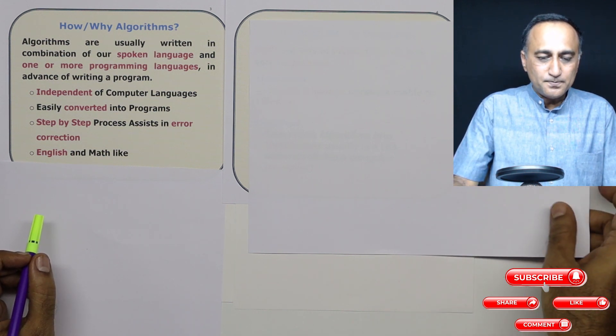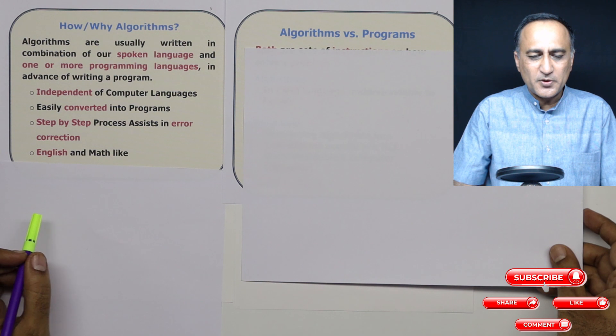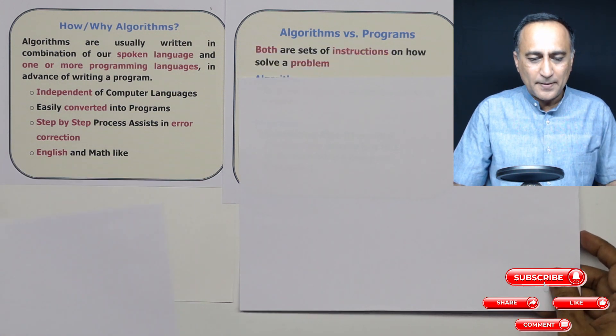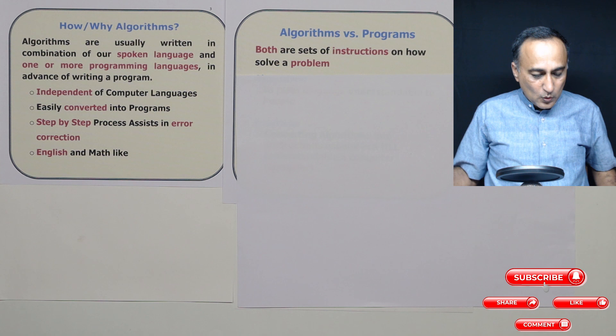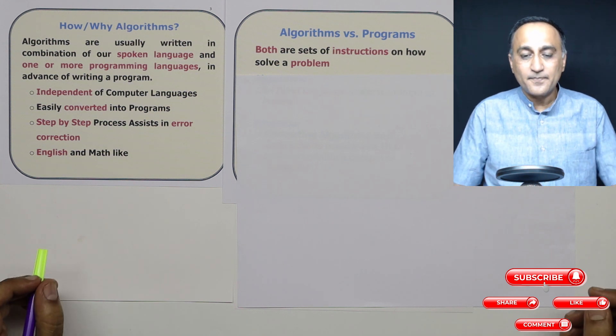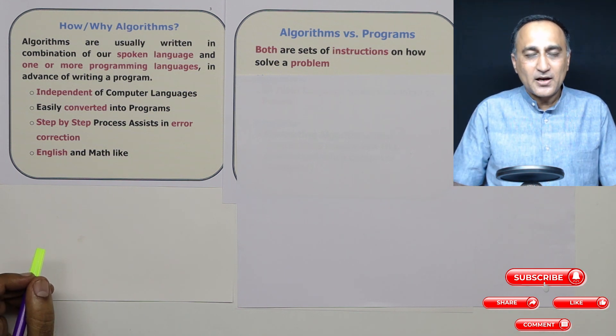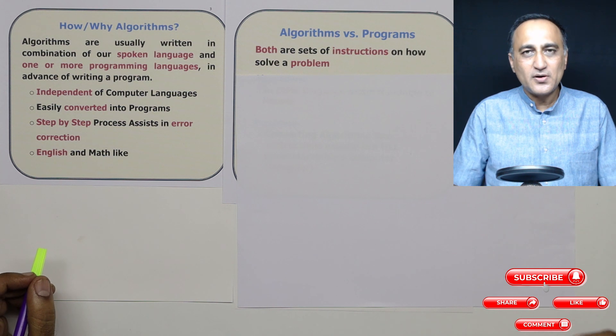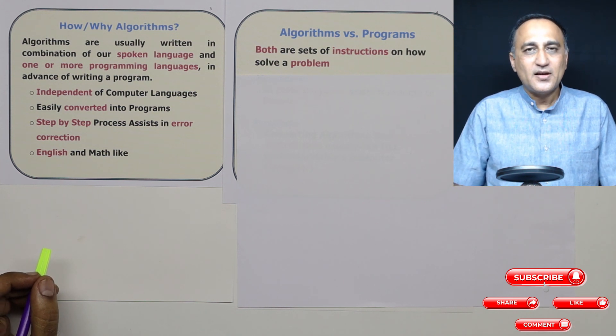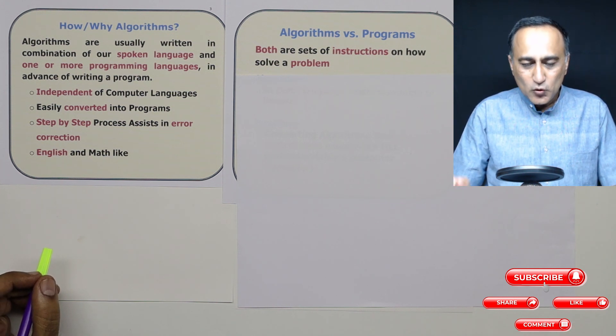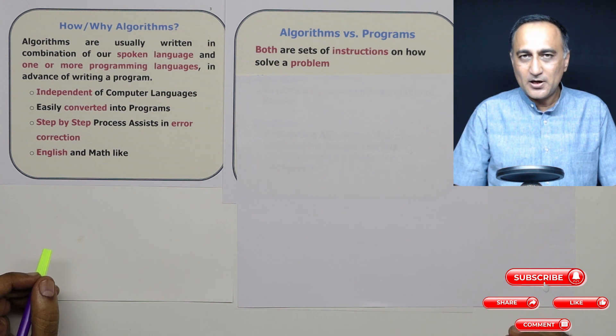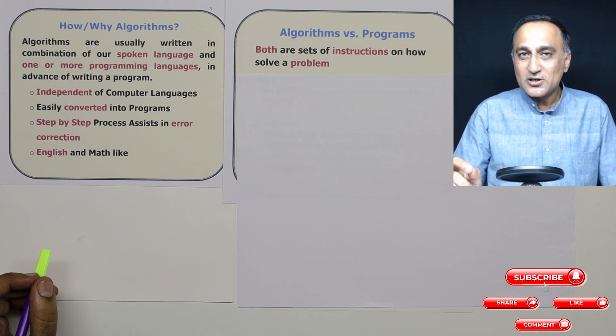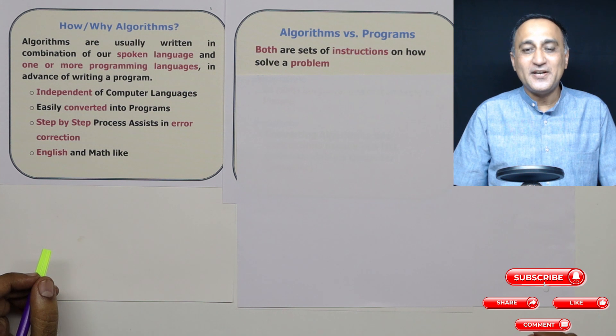Now, what is the difference between an algorithm and a program? The first thing, let's try to understand how they are similar. Both of them, algorithms and programs, are actually instructions. Both are instructions to solve a given problem. But where they are used or how they are used really differs.